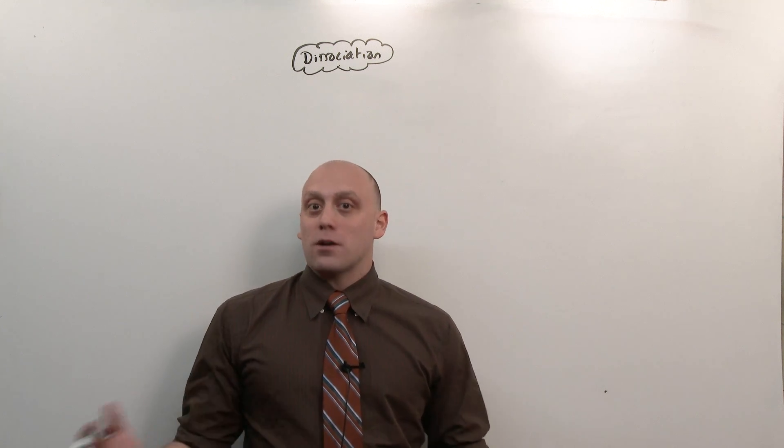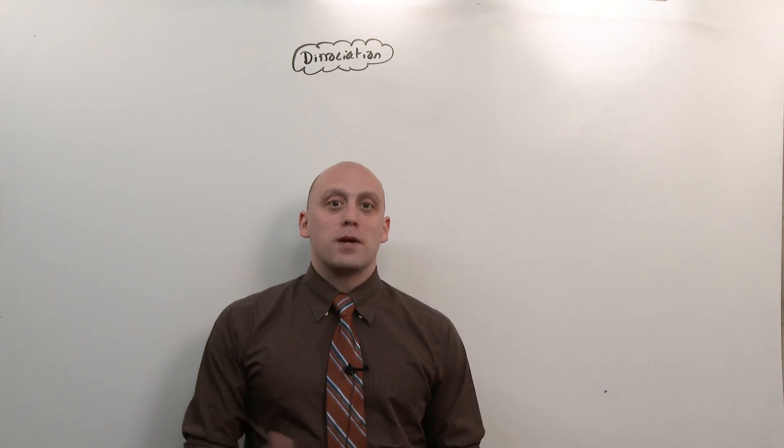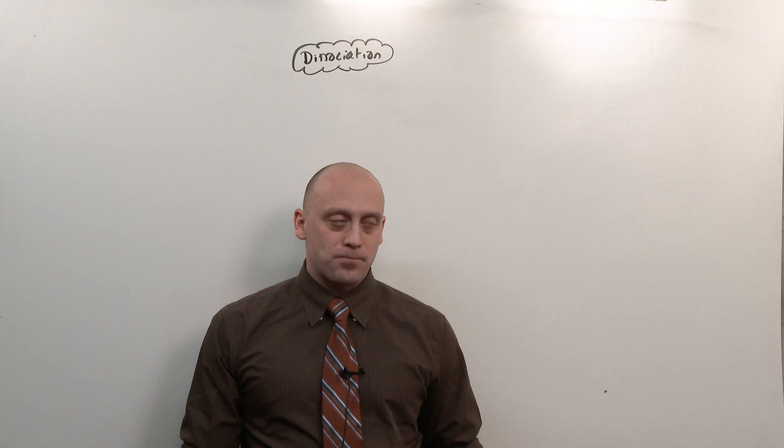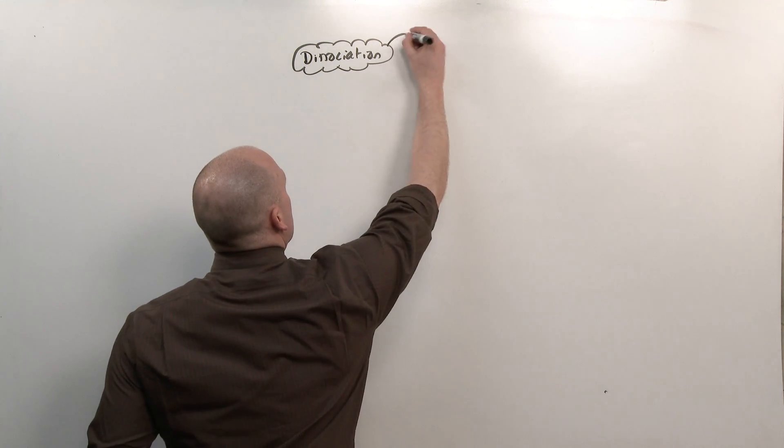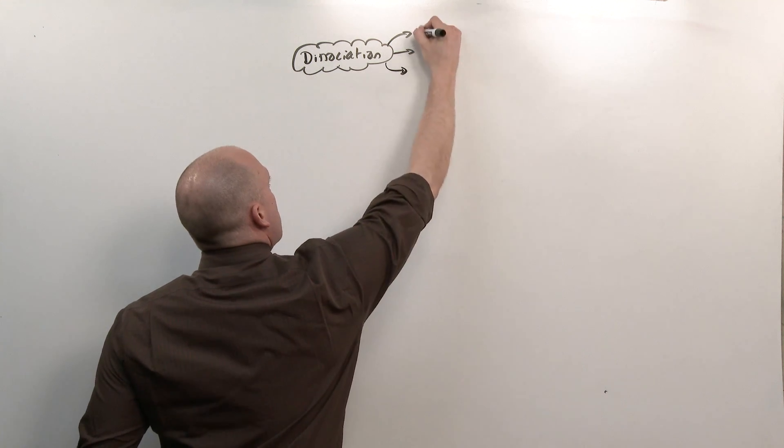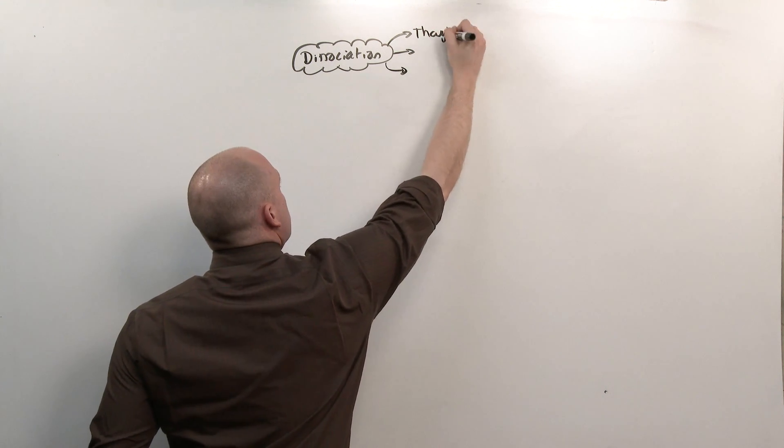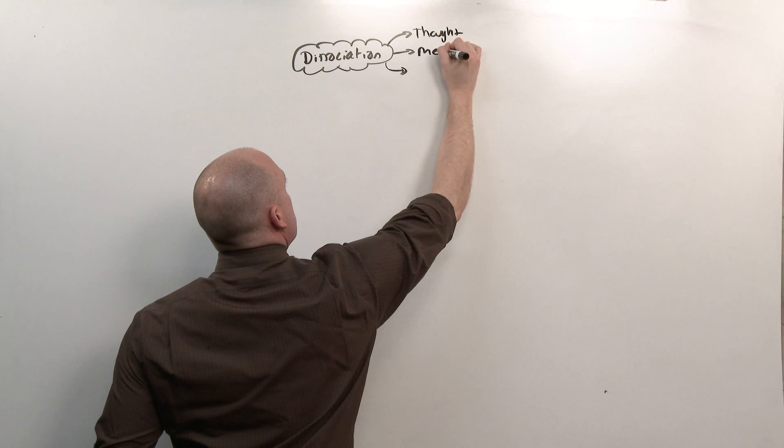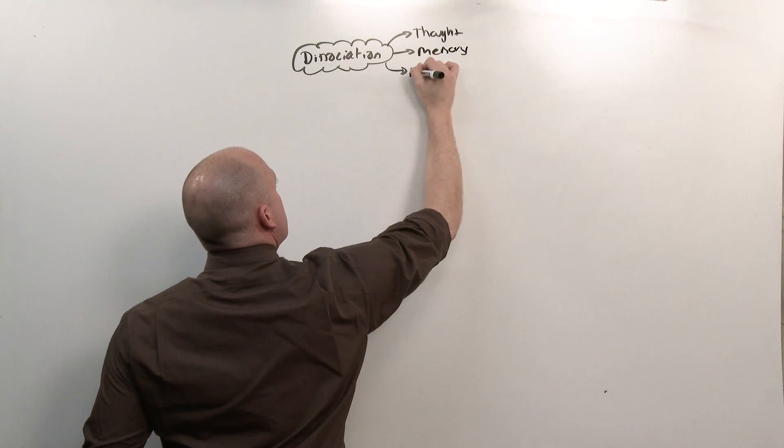When you get severe and it causes impairment, it becomes a disorder. So dissociation is going to be the separation of mental functions that are normally connected. That is thought, memory, and identity.